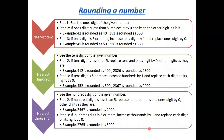The next topic is rounding numbers. Rounding a number means estimating the number. To round to the nearest ten, step one: look at the ones digit. If the ones digit is less than 5, replace it with zero and keep the other digits as they are. For example, 42 — ones digit is 2, which is less than 5, so it rounds to 40. Similarly, 351 rounds to 350.